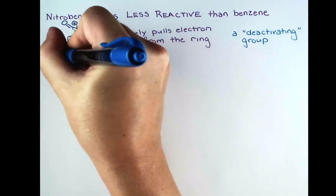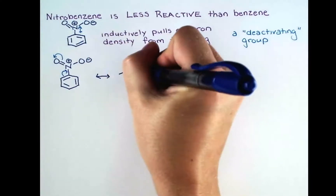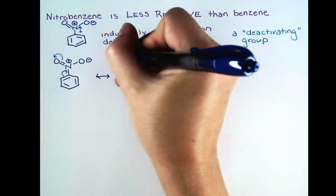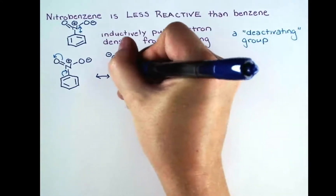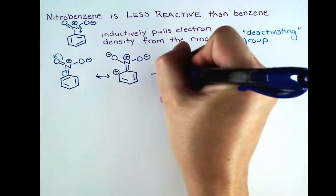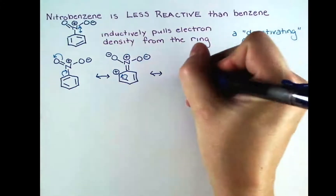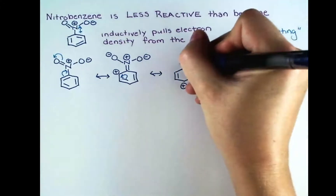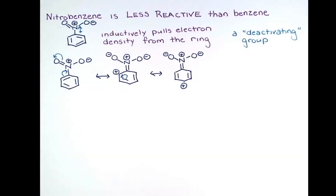We can also show how the nitro group pulls electrons by drawing resonance structures. We can use the conjugation of the aromatic ring with the double-bonded oxygen of the nitro group to show how electrons can be pulled out of the ring. We're just moving electrons around, so the molecule needs to stay overall neutral, and in this resonance form that we draw, we end up with two positive charges and two formal negative charges.